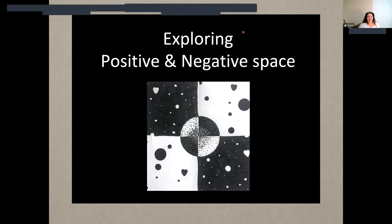We have been talking about the seven elements of art and we're going to continue those. Last time we were together we were working on value, which is going to be one of the first steps into really offering us a 3D illusion on a 2D surface. Value is one of those elements that offers us the opportunity as artists to create space.